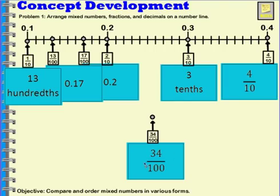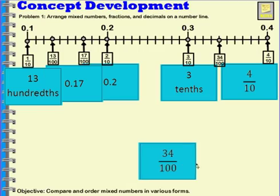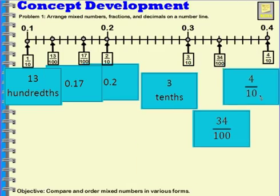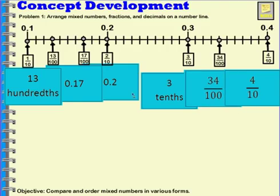Now I have 34 hundredths. So that would be 3 tenths plus 4 hundredths. So here's 3 tenths. This would be 31 hundredths, 32 hundredths, 33 hundredths, 34 hundredths. So this card needs to go in between 3 tenths and 4 tenths. So this is the order of our cards.